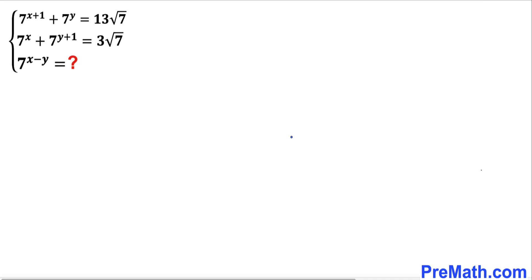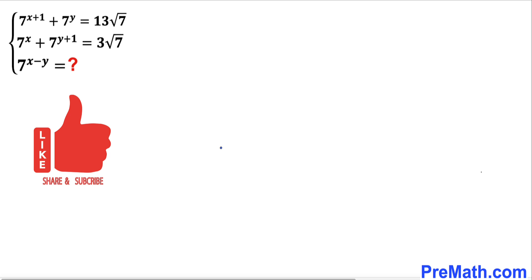Welcome to Pre-Math. In this video we have a system of two equations: 7^(x+1) + 7^y = 13√7, and 7^x + 7^(y+1) = 3√7. We are going to find the value of 7^(x−y).